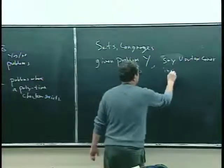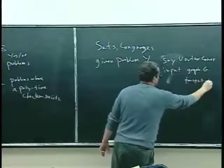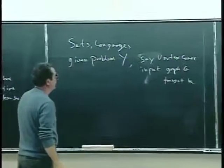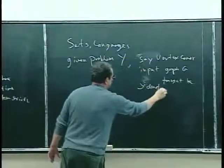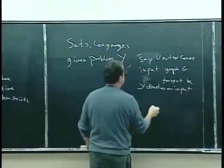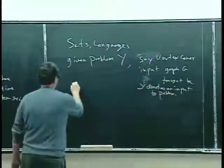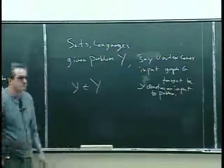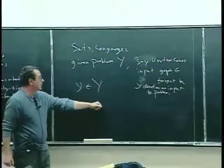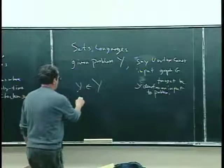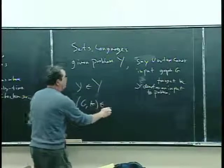So input or instance is a graph G and a target, call it K. So Y denotes an input or an instance to the problem. And then we can talk about little y contained in capital Y — what does this mean? It means the graph and the target is contained in vertex cover.